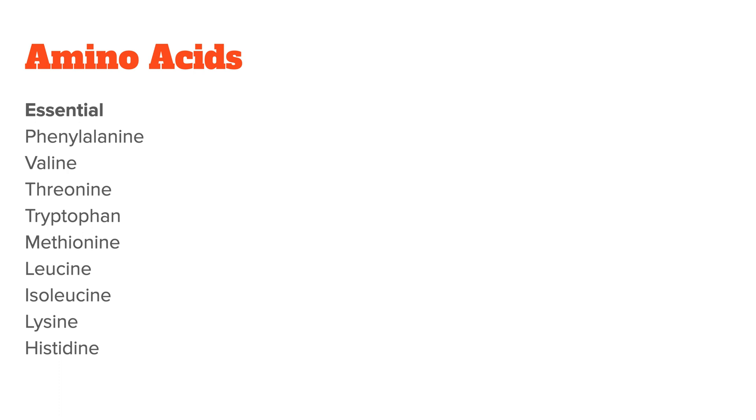As you can see from the list, the group of essential amino acids has nine entries. This is where the notion of nine essential amino acids comes from. But why then do some sources say that there are only eight essential amino acids?